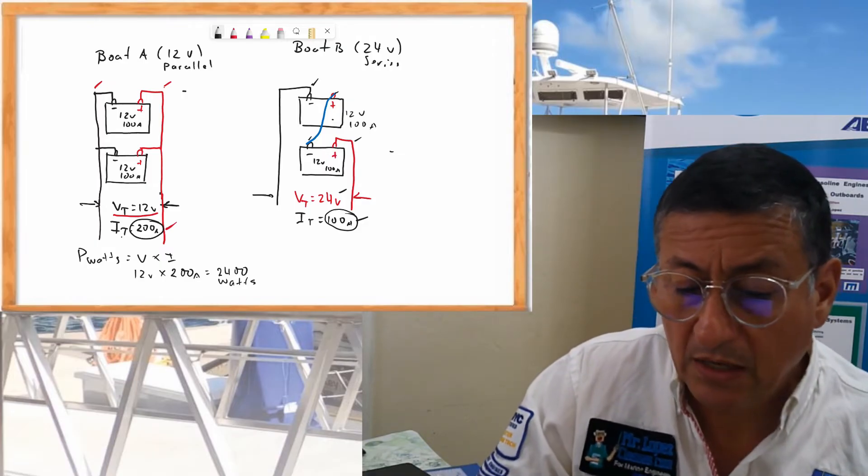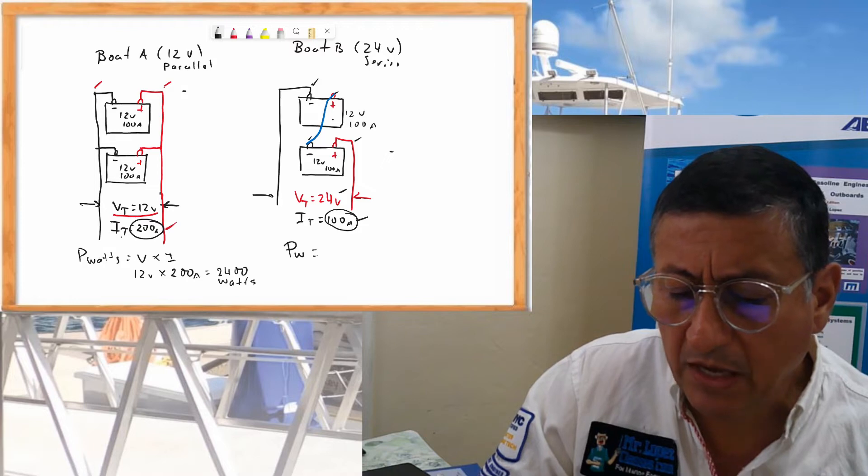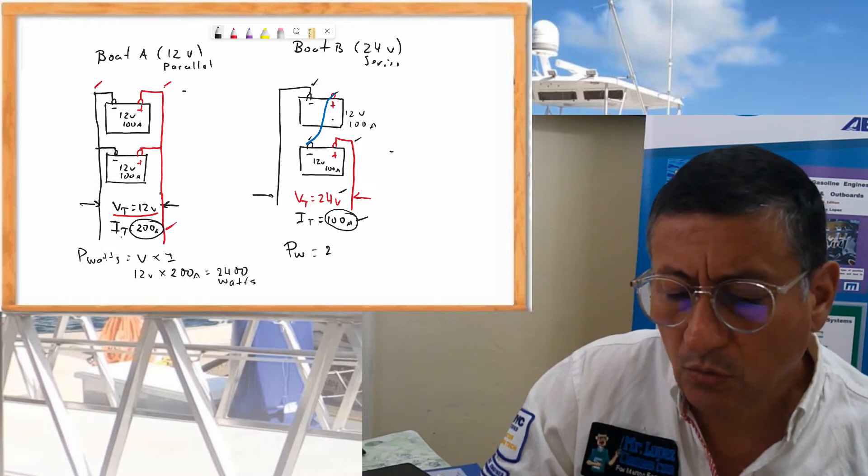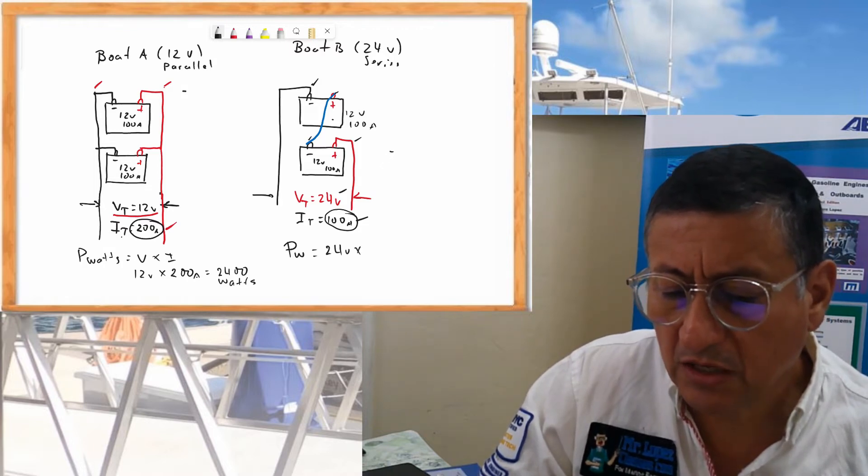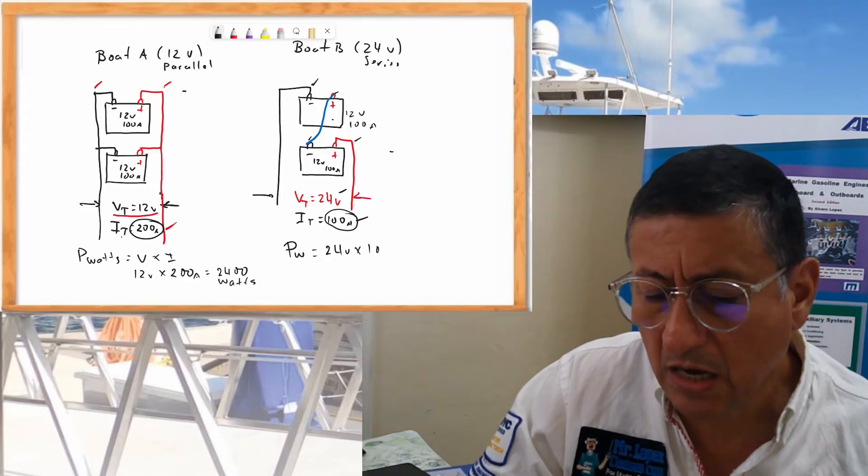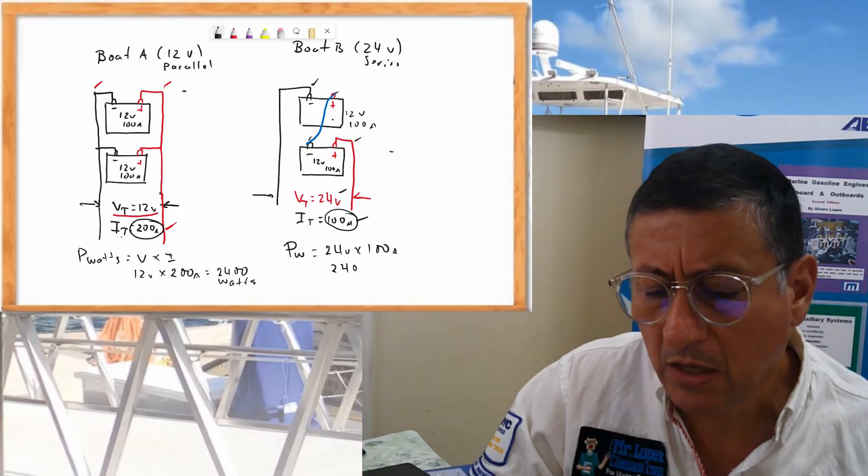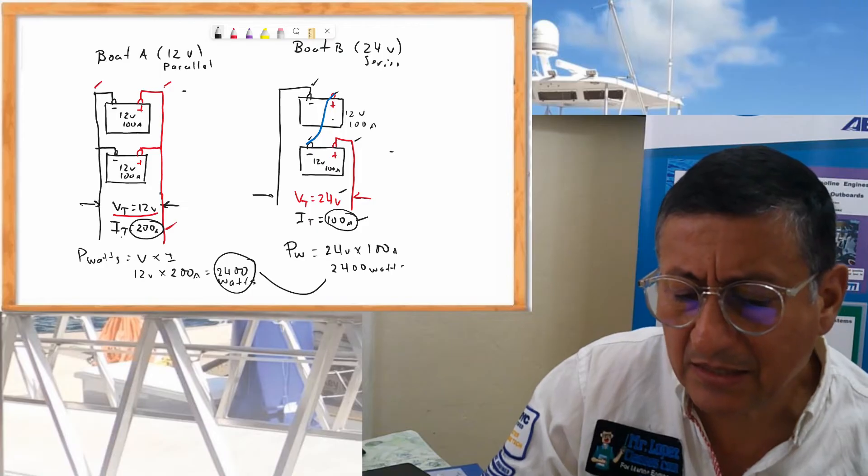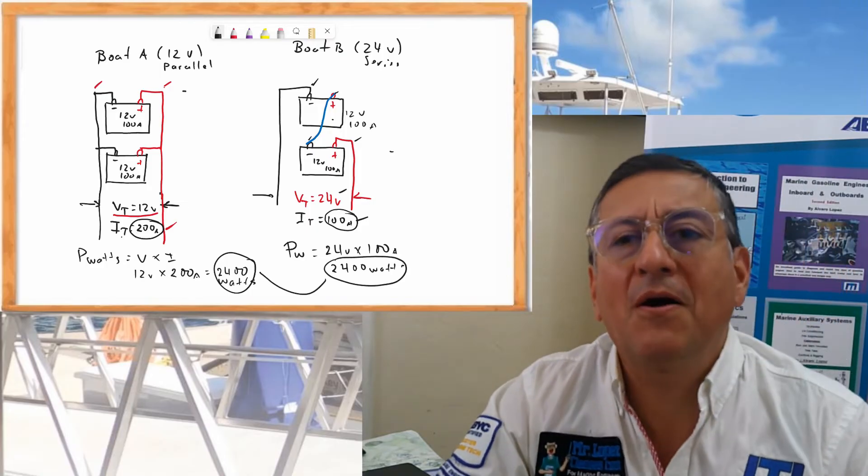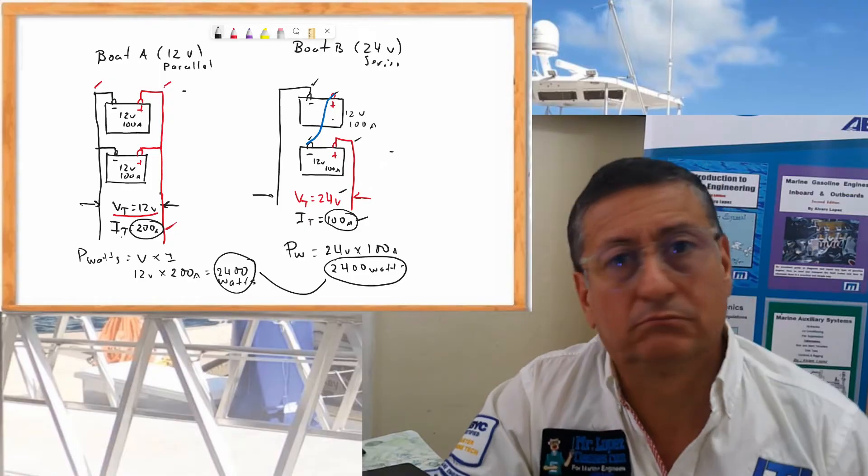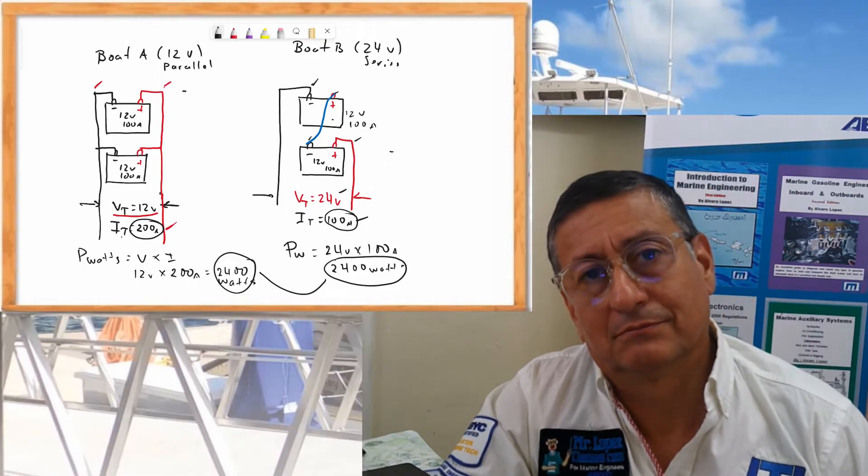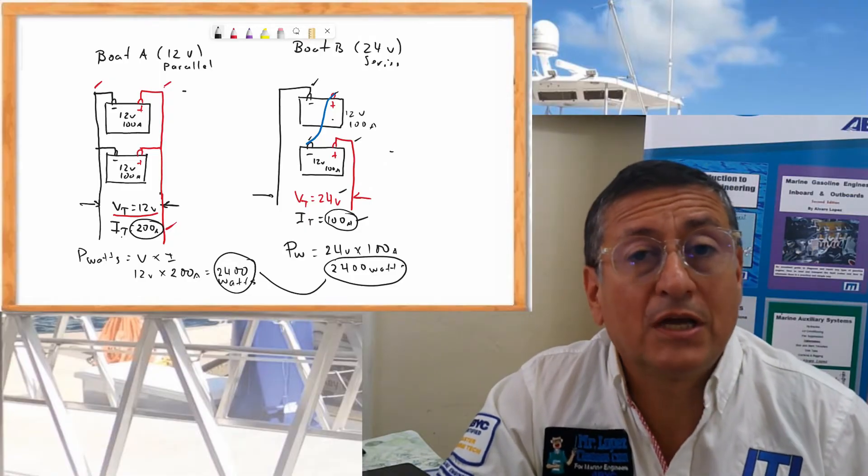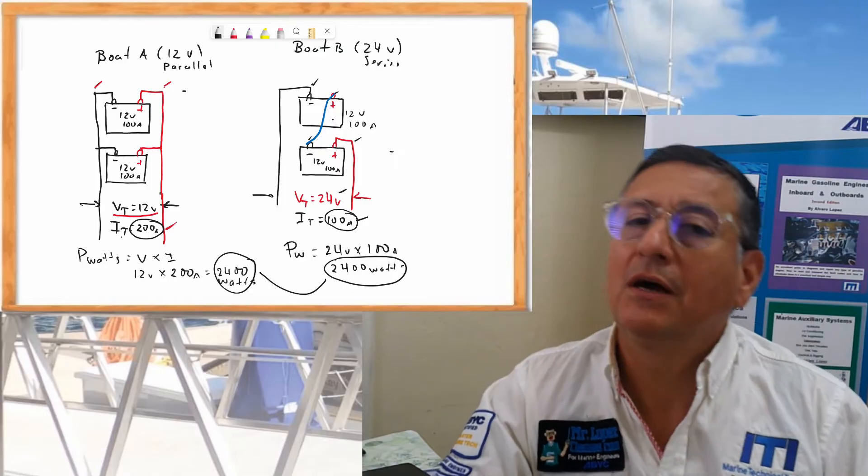In the second one, the power in watts will be equal to the voltage, 24V times the intensity, 100 amps. The output power will be 2400 watts. The power is the same. It's exactly the same in both cases. I have the same power in 24 volts, the same power in 12 volts. Great!